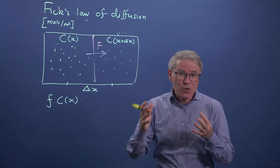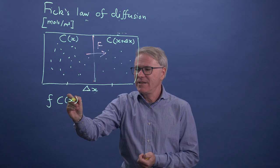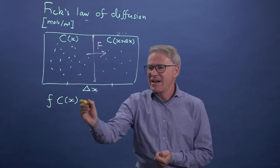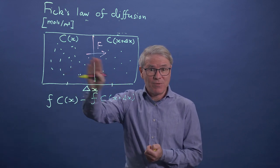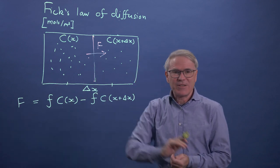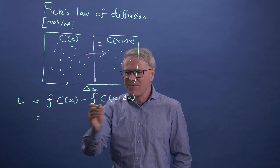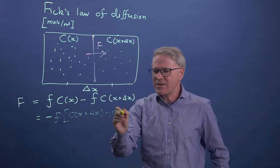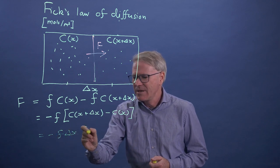that some fraction F of these particles will move so that they move across this boundary. But C is just proportional to the number of particles. So what's going to happen is a number CX times F, this is the fraction that will move across, will move from left to right. And then some fraction F times the concentration at this other location will move from right to left, will move the other way. So the net flux can be written like this. Now let's just think about this.